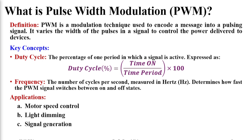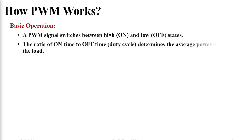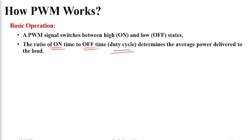Now let us see how PWM basically works. The basic operation of PWM depends on two things. First is the frequency of the PWM signal — how fast it will switch between on and off state. Second, it depends on the ratio of on-time period to off-time period, which we call the duty cycle. These are the two very important factors which control the PWM signal: frequency and duty cycle.